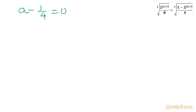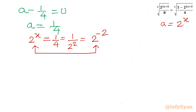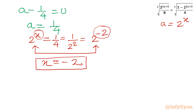From the first factor, a - 1/4 = 0 gives a = 1/4. Since a = 2^x, we write 2^x = 1/4 = 1/2² = 2^(-2). Taking the denominator to the numerator with a negative exponent, and since the bases are identical, the exponents must be equal. Therefore x = -2.